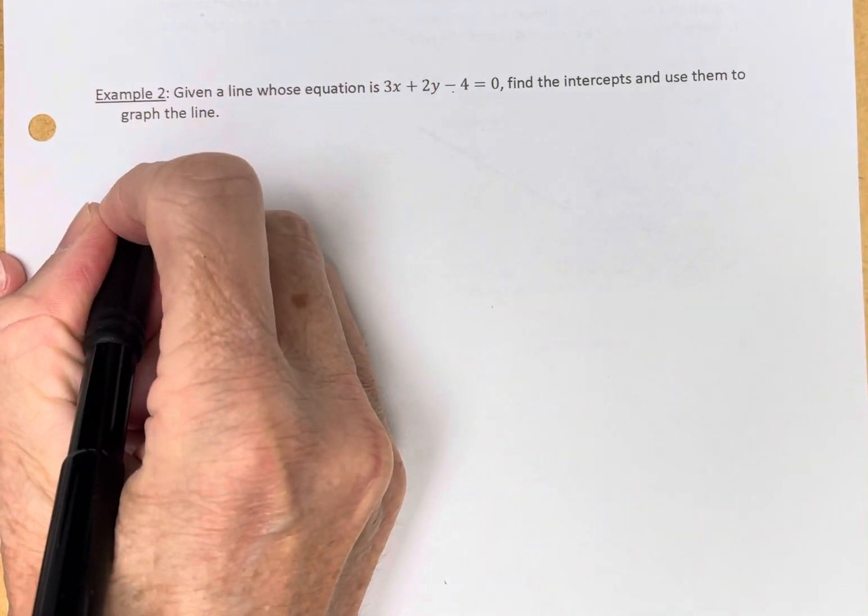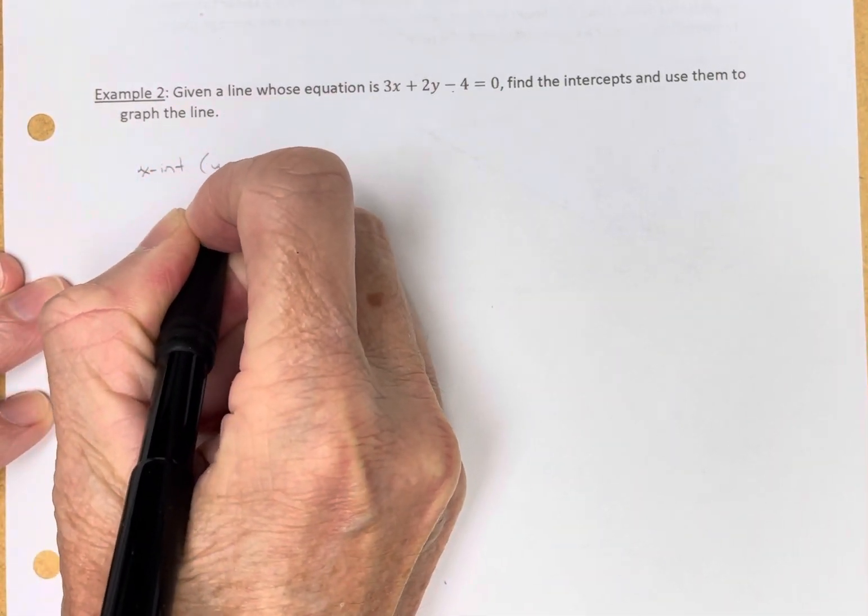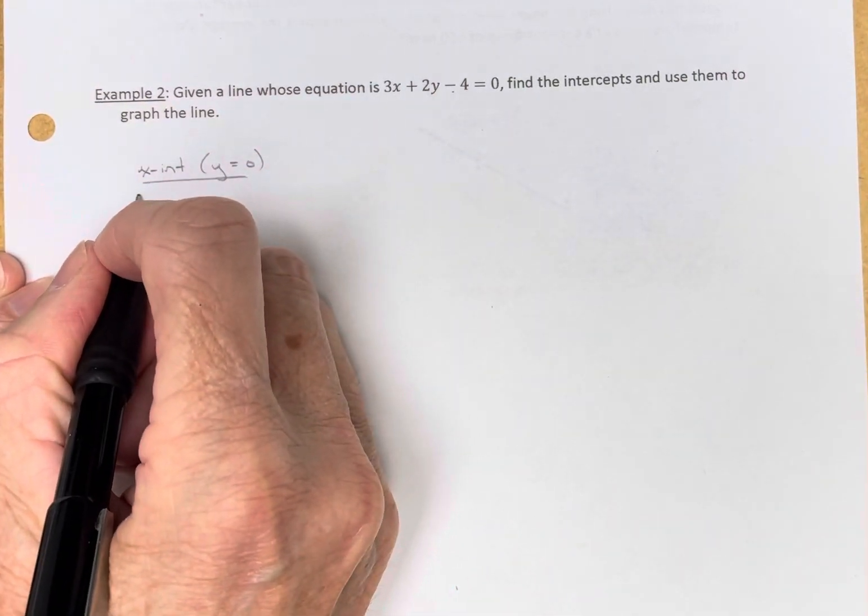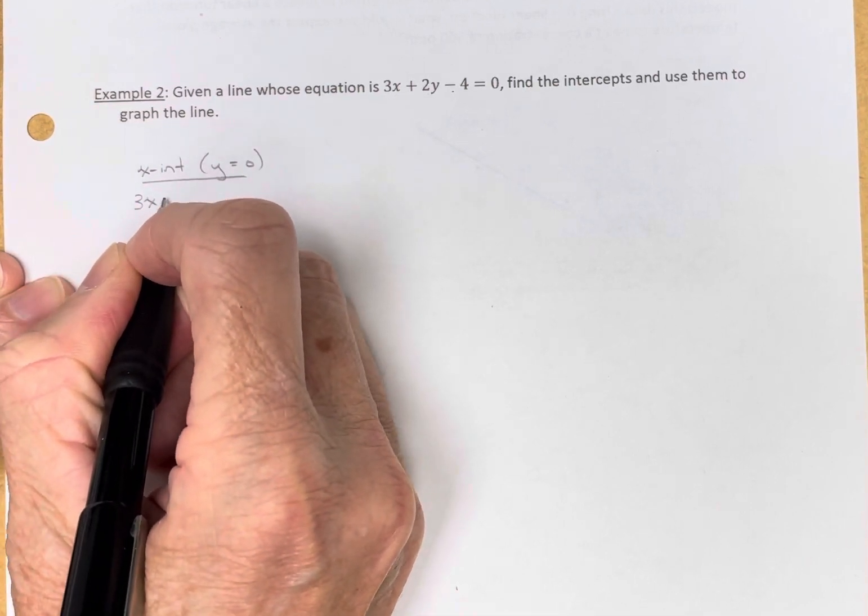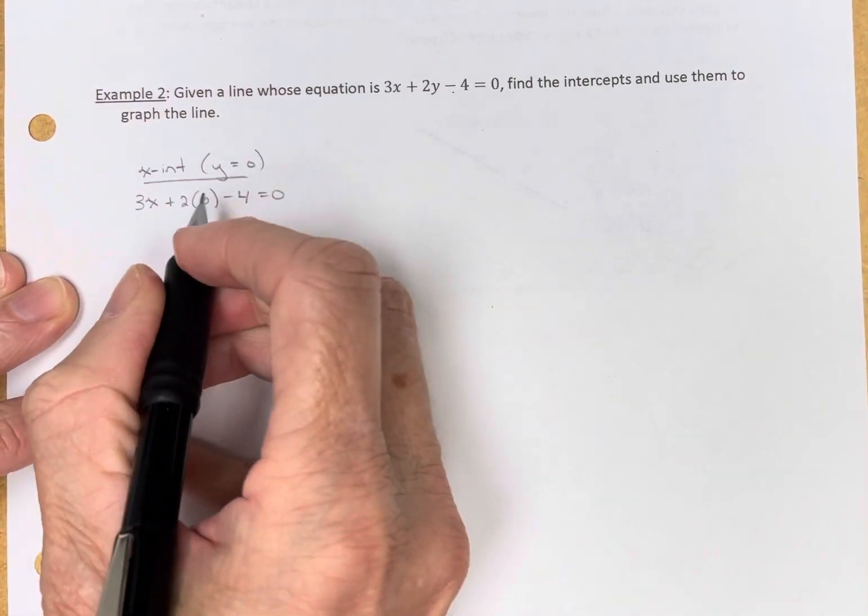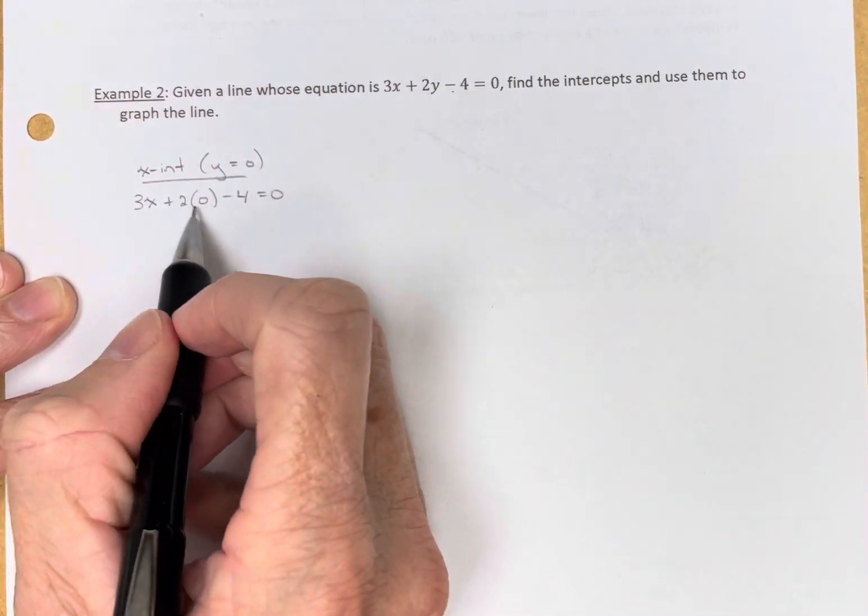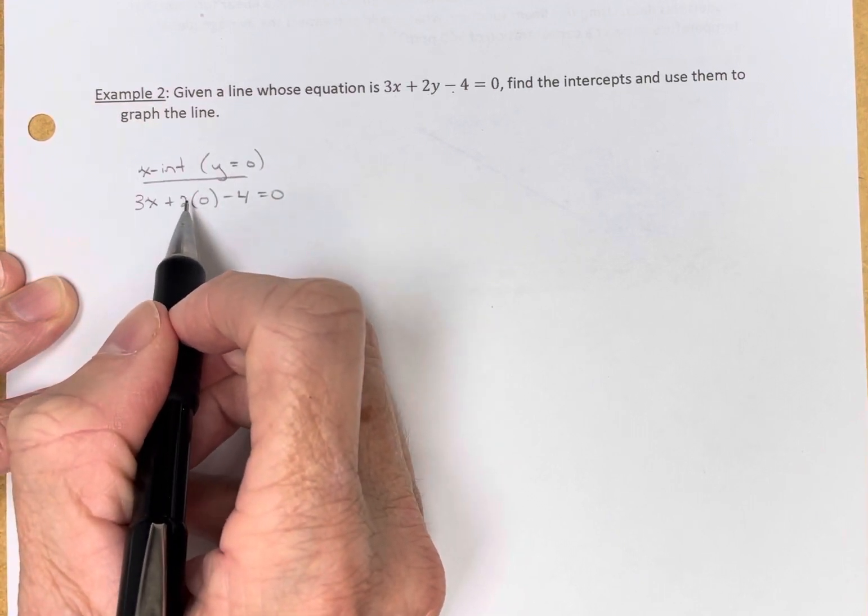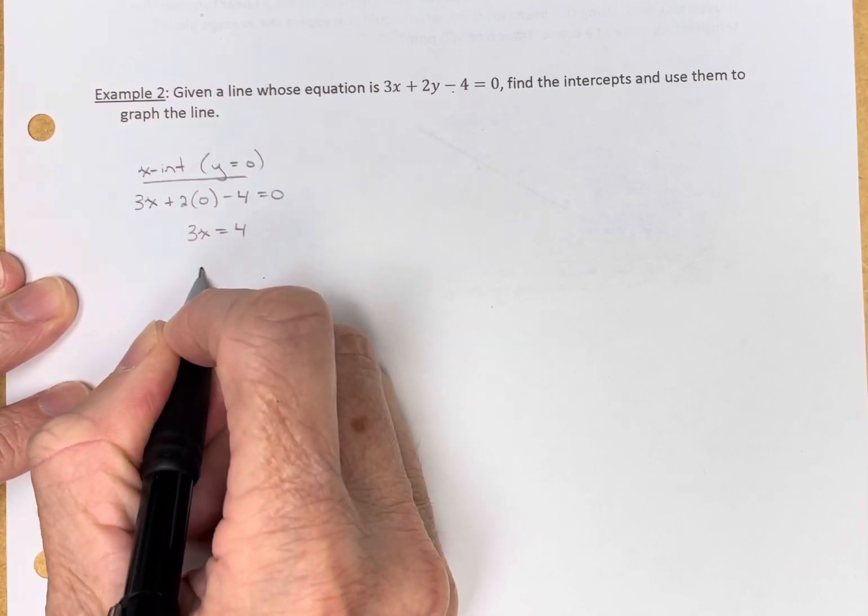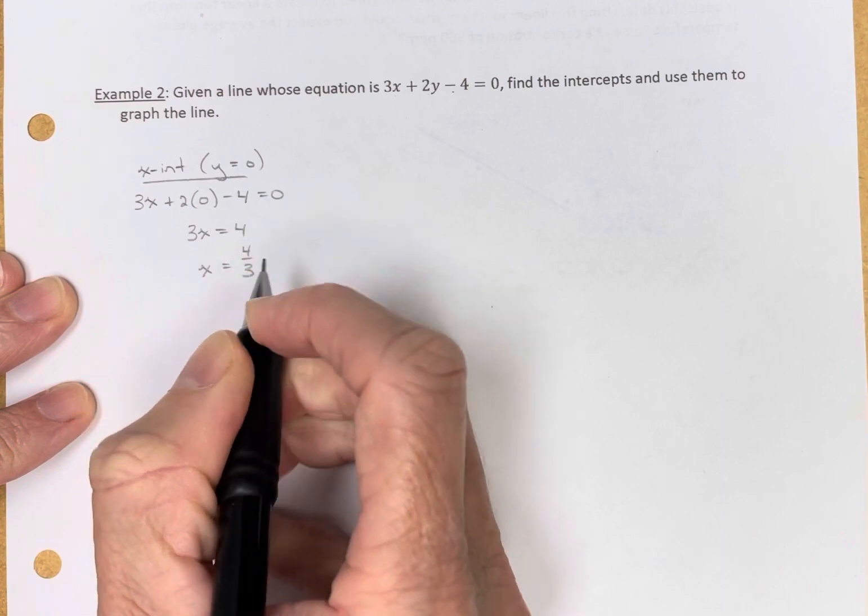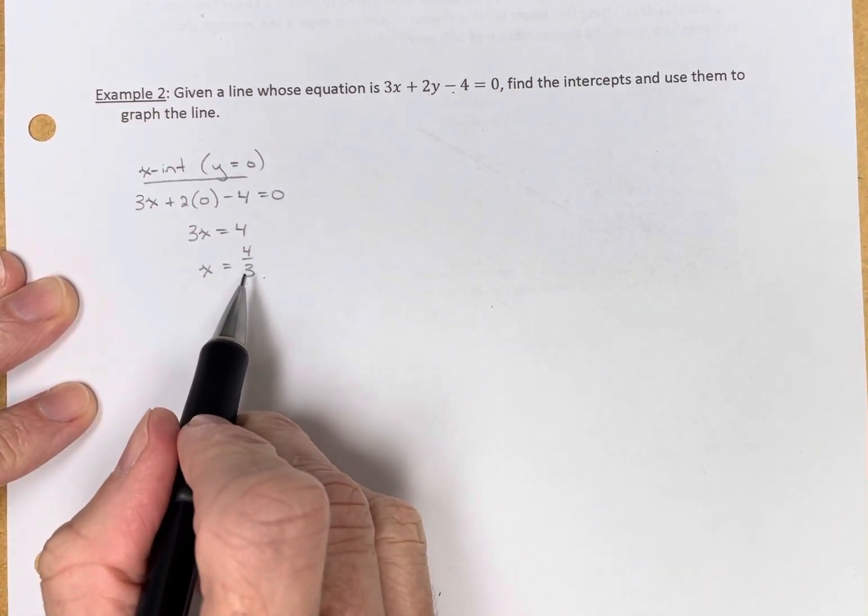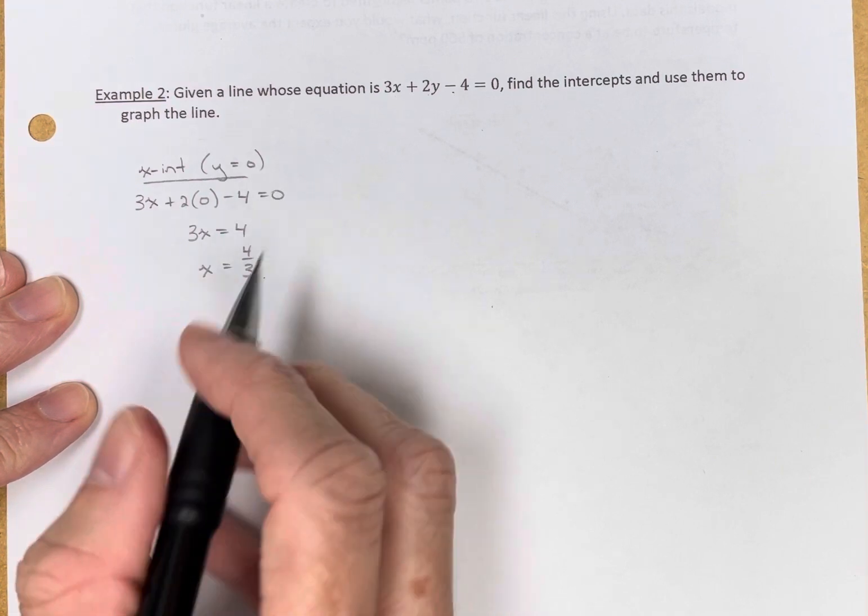So the x-intercept is when y equals 0. Let's take my equation and put 0 in for y. So 3x plus 2 times 0 minus 4 equals 0, and we can see that when y is 0, the y-term disappears. It's multiplied by 0. So we have 3x equals 4, and x equals 4 thirds.